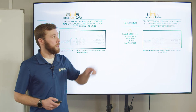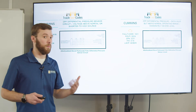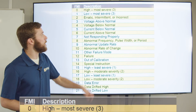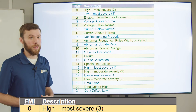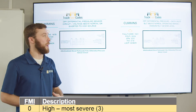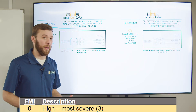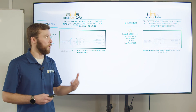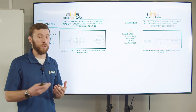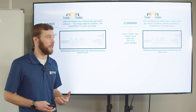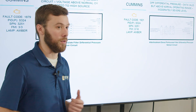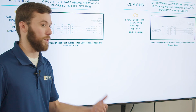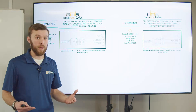If we look over here, we see DPF differential pressure — 'data valid but above normal operating range' — with FMI zero. Looking at the list, we see FMI zero is 'high, most severe.' So that means our ECM is actually seeing that we have a high differential pressure on that DPF, meaning we could have a high soot load — the DPF is full of soot — or something else in there: ash, coolant, or oil. Something is restricting that DPF, so we're actually seeing a mechanical fault here, while the other code indicates an electrical fault — that could be wiring, the sensor, or the module itself.